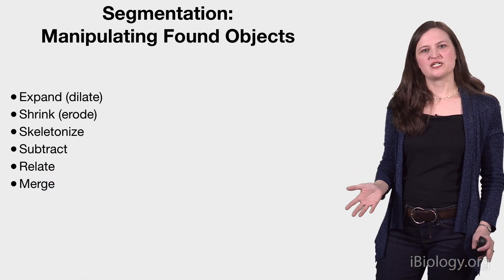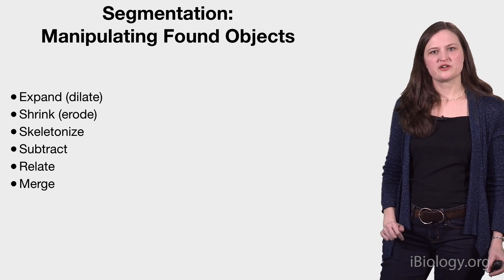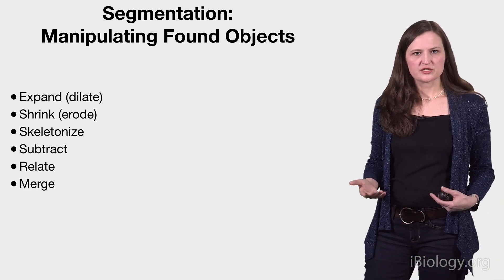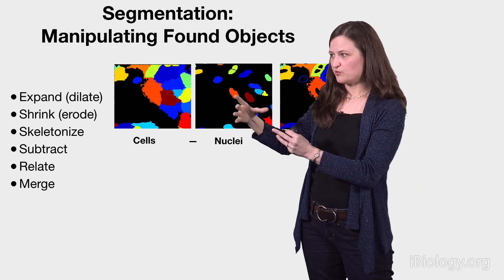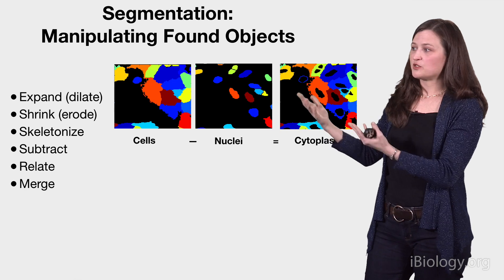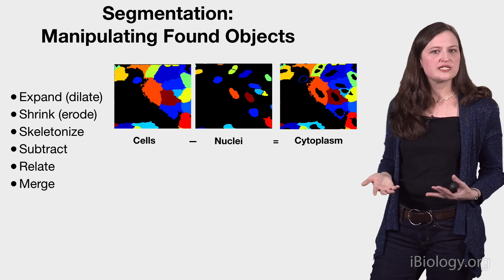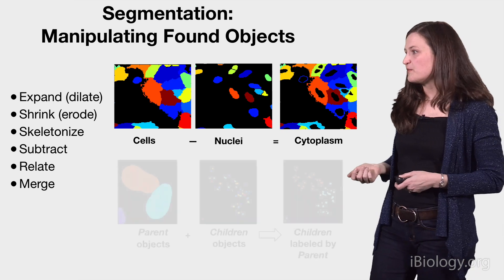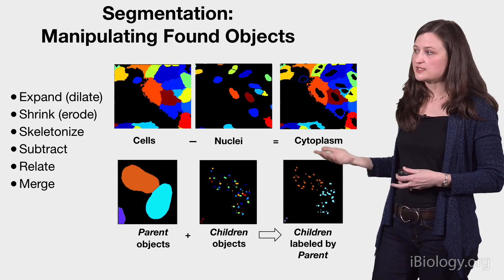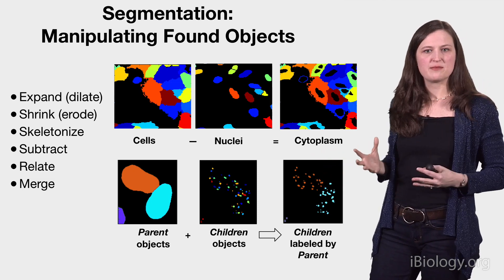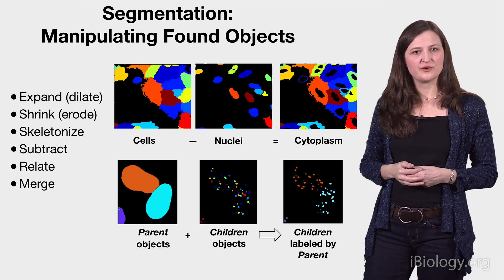Whether you've identified your objects using classical image processing algorithms, supervised machine learning, or even deep learning, once the objects or regions of interest are identified, you can manipulate them to customize your own project. For example, one really common step is if you have identified nuclei in your image, you can expand those borders out by a process of dilation to find the edges of the cell. Once you've done that, you can do a simple subtraction procedure to take the cell area minus the nucleus area and end up with a cytoplasm, allowing you to measure the fluorescent protein located within the cytoplasm. As another example, you might have identified speckles within nuclei, and you can associate all of these individual speckles to figure out which nucleus and which cell they belong to. There are many other things you can do to manipulate objects in this kind of way. You can also track objects if you have time-lapse images, and I hope you'll check out Kevin Alessari's video on tracking.